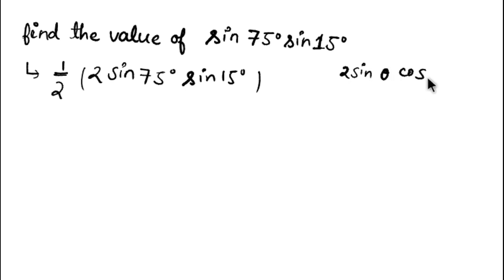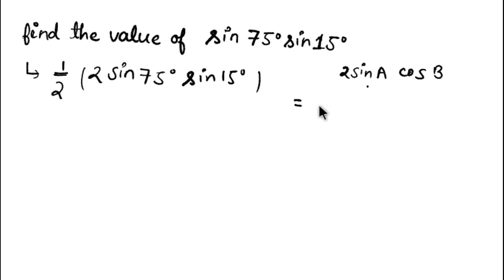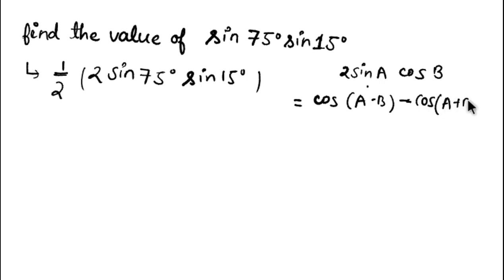Now we recognize this is in the form 2 sine A into cos B. The expansion of 2 sine A into cos B is: cos(A minus B) minus cos(A plus B). This is the expansion: 2 sine A cos B equals cos(A minus B) minus cos(A plus B). We apply this formula here.